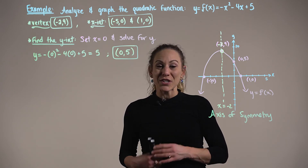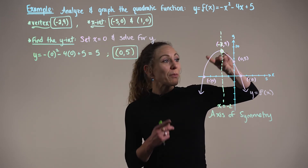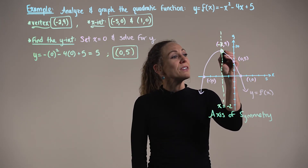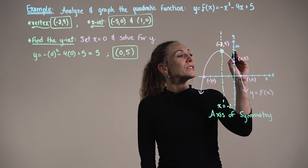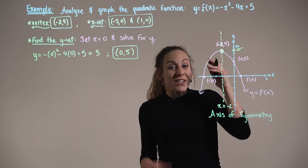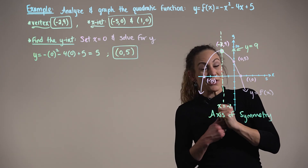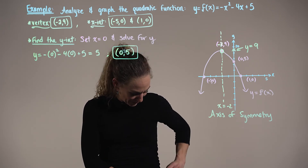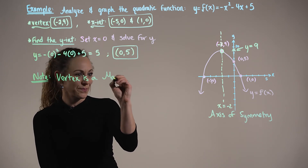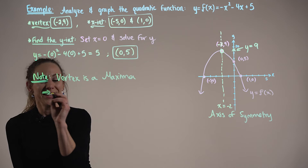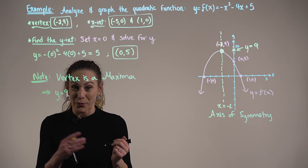From the leading coefficient test, since our leading coefficient was negative, the parabola opens downward, making the vertex a maximum point. Looking at the y-axis, the largest possible y-value is 9. So the vertex is a maximum, and y = 9 is the largest possible y-value.